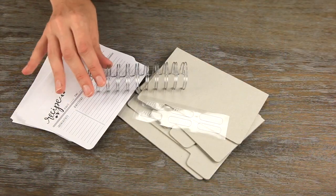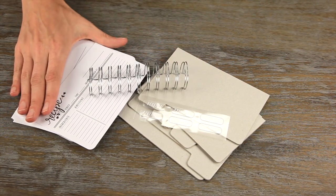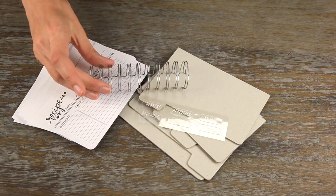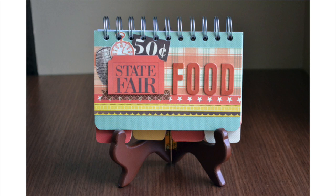This is the recipe book kit. As you can see, you get 5 chipboard tab cards, 32 recipe cards, label stickers, and wire. You can easily personalize or customize with any chosen pattern paper.